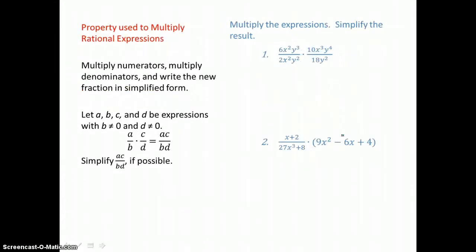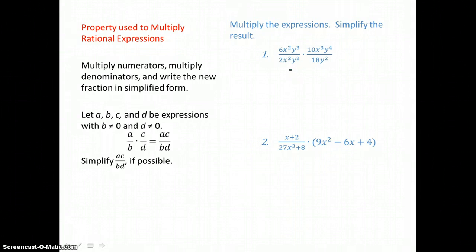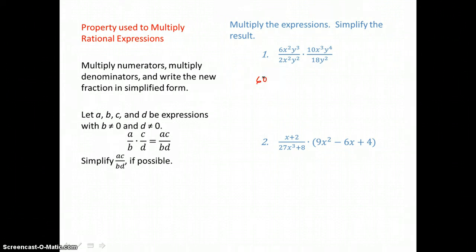Here we're going to multiply rational expressions, so we're multiplying fractions. When we do that, we multiply numerators and multiply denominators, then simplify the result if possible. If I multiply across in this first example, I'm going to have 6 times 10, which is 60. How many factors of x? 2 and 3, that's a total of 5 factors of x.